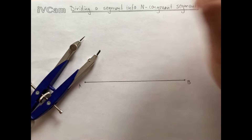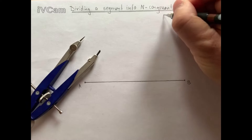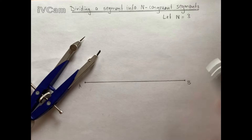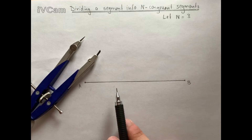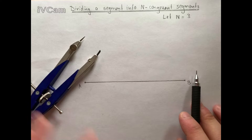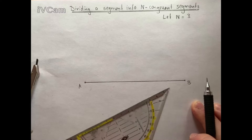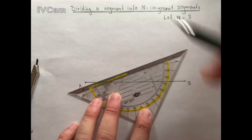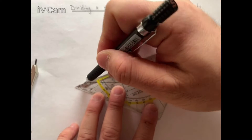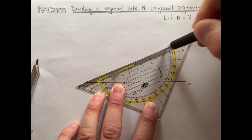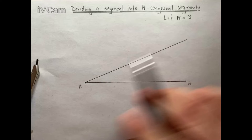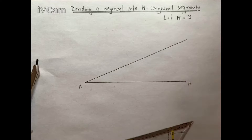Let's take n equal to 3. So how do we split this segment into exactly 3 congruent segments? The first step is to draw, with a straight edge, a segment at some angle that is either above or below the line. I'm picking a line that goes above like this.